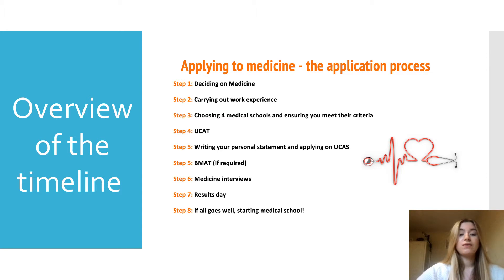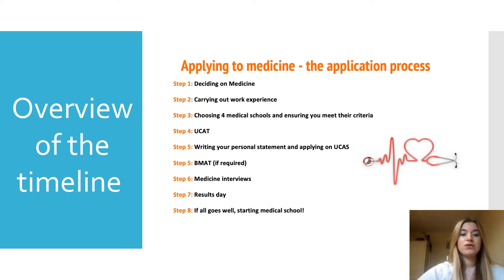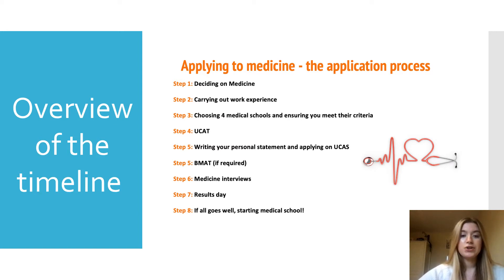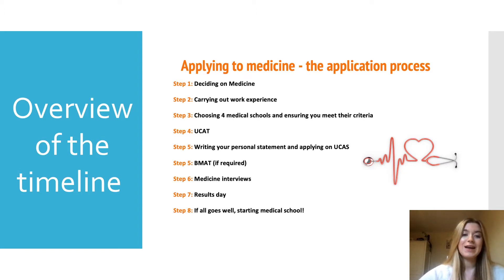Then you need to look at the different medical schools and ensure that you meet their criteria. Then it's moving on to the application tests such as the UKCAT and the BMAT if your medical school of choice requires this. Then you need to start writing your personal statement and applying on UCAS, taking note that the medicine UCAS deadline is the middle of October, which is much earlier than for most other courses. If you're lucky you'll be invited to interview, and after that it all counts on your A-level or equivalent results, and then starting medical school if all goes well.